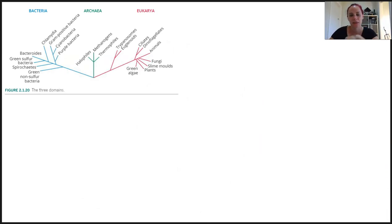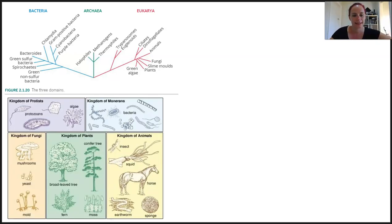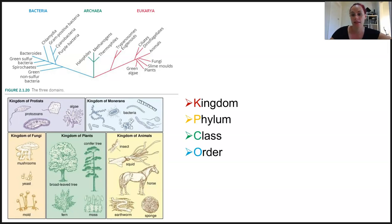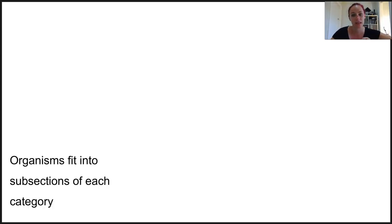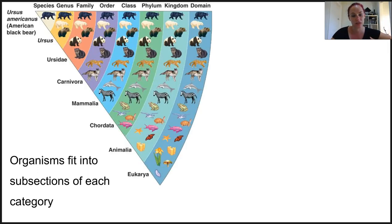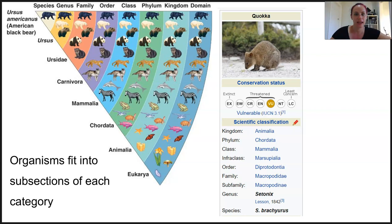Linnaean classification splits organisms into groupings. Initially the three domains, which encompass all types of life, were the first foundational grouping. After this, organisms are classified into five different kingdoms, and then it goes down: kingdom, phylum, class, order, family, genus, and species. The best way to remember these is to make an acronym — my personal favourite involves Katy Perry every single time. An organism will fit into a subsection of all of these groups, and they'll have a full scientific categorisation based on these features. If you look at any Wikipedia page, you will see all of that organisation right there.